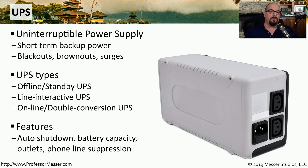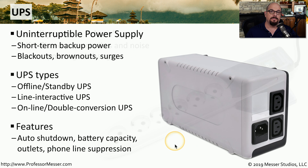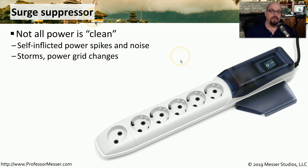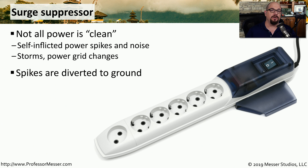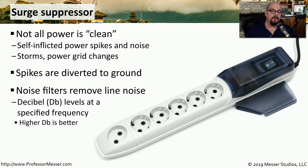There are also different features available on different UPS models. Some have an auto-shutdown feature, which tells the connected computer to begin the shutdown process because main power has failed. There are also differences in battery capacity and number of outlets, and some UPS units have interfaces for phone lines or other network connections. Another type of power protection is a surge suppressor. The main voltage line may have spikes and noise created by changes in the electrical system or storms. The surge suppressor detects these spikes and sends the additional voltage to the electrical ground. Some surge suppressors have filters to remove noise on the line, rated in decibels — the higher the dB, the better the filter.